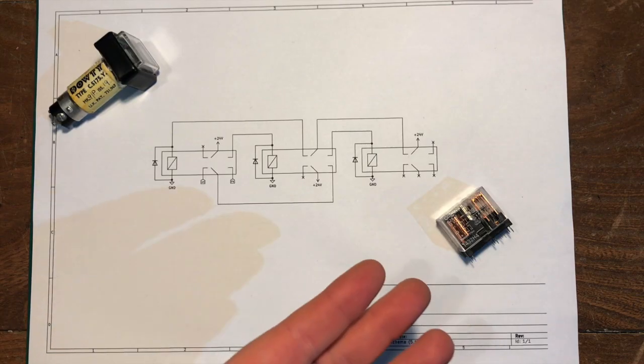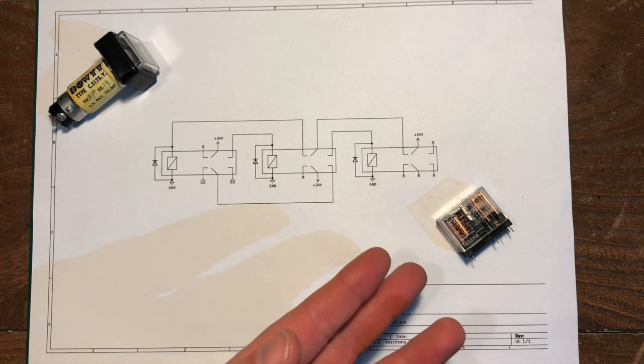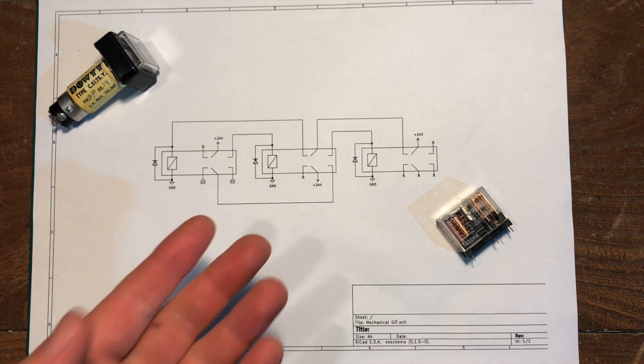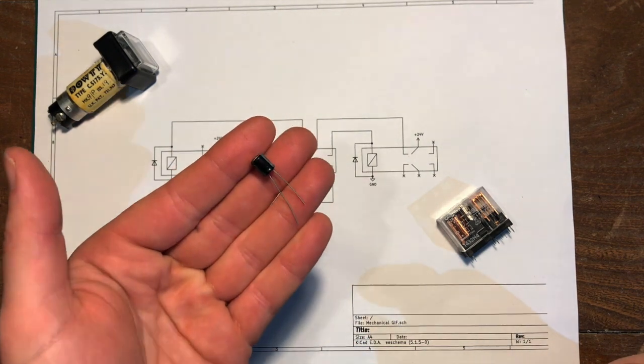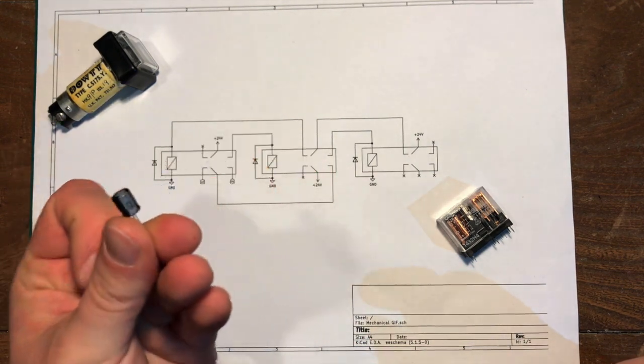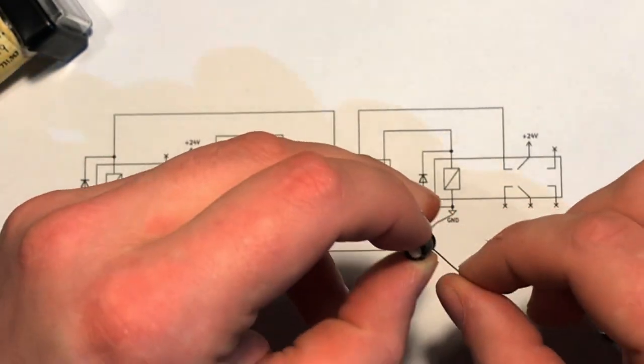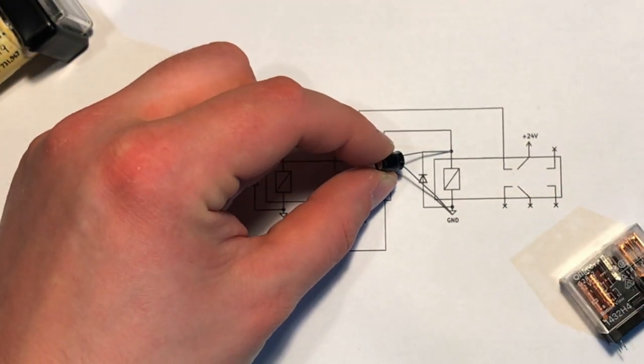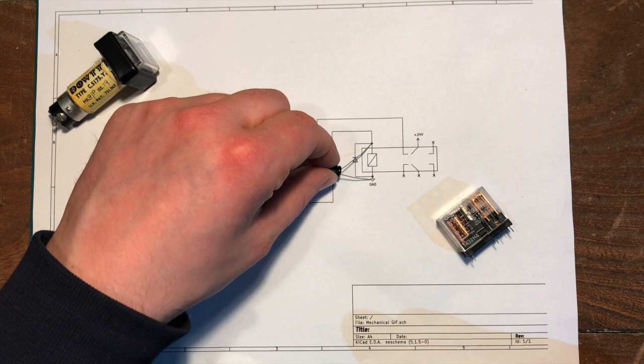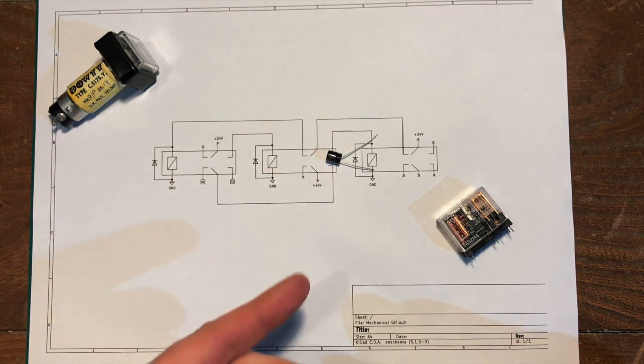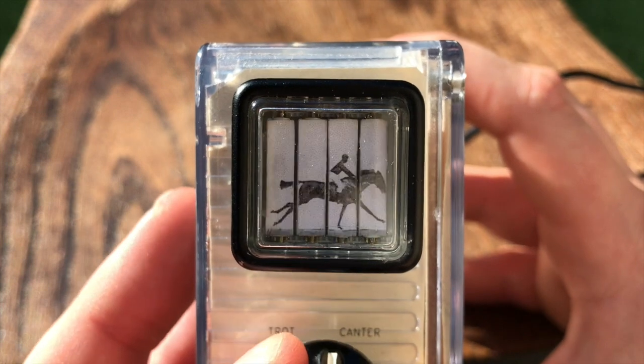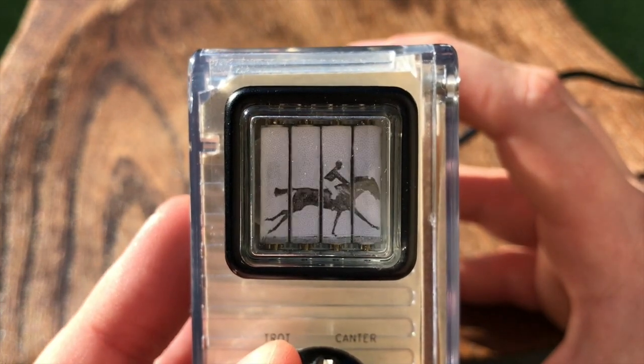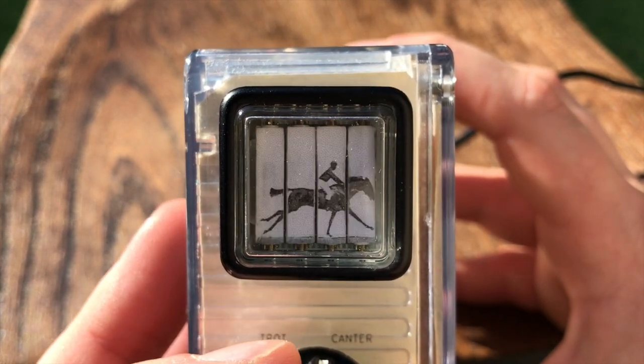The circuit works because the relays are actually quite slow at switching, which in this case is a good thing. And what's been left out of the diagram here are the capacitors that affect the timing of the switching. These are put across either side of the coil and the bigger the capacitor the slower the relay is to turn on when you put power to it. And by switching in different capacitors that's how we're getting different speeds for the display switching.